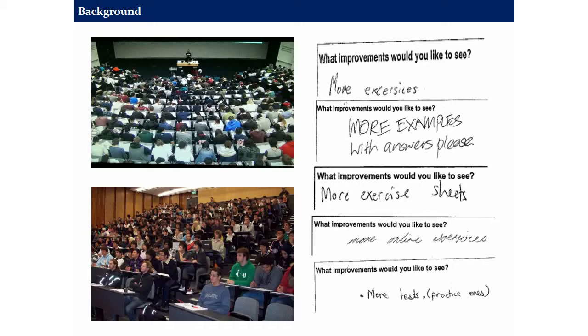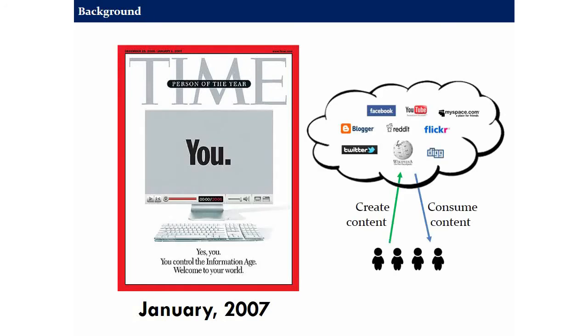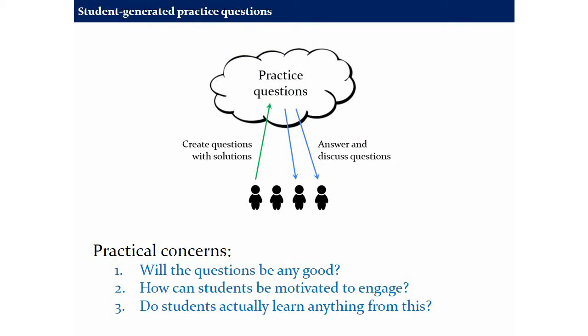The challenge was how to produce all these practice questions. In January 2007, Time's Person of the Year was everybody in the world — this was when the buzzword of user-generated content was really massive. YouTube had just sold to Google. Our students were very enthusiastic users of systems like Wikipedia and YouTube and understood the value of this model: as long as you have enough individual users each making a small contribution to some resource, that resource can become really valuable. So I thought it might be interesting to apply this model to the problem of creating lots of practice questions.